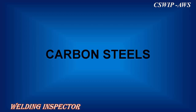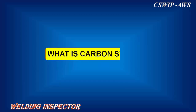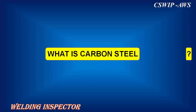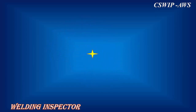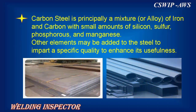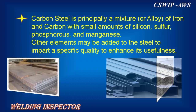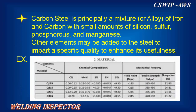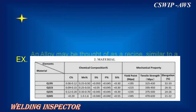Carbon steels — what is carbon steel? Carbon steel is principally a mixture or alloy of iron and carbon, with small amounts of silicon, sulfur, phosphorus, and manganese. Other elements may be added to the steel to impart a specific quality and enhance its usefulness.